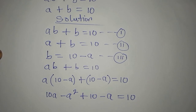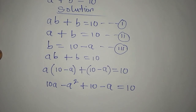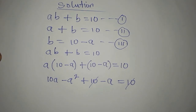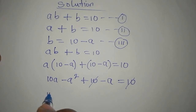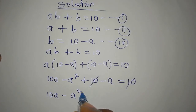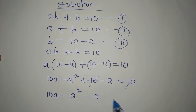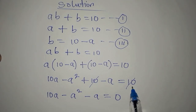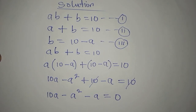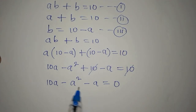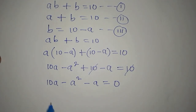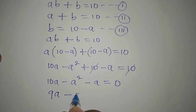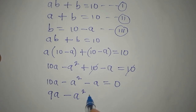From here, you will see that the 10 on both sides cancels, and we have 10A minus A squared minus A equals 0. Collecting like terms, we get 9A minus A squared equals 0.